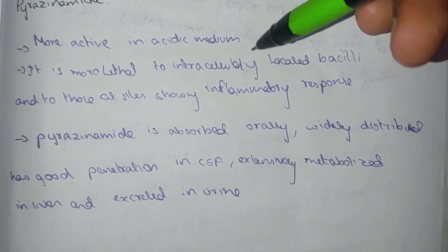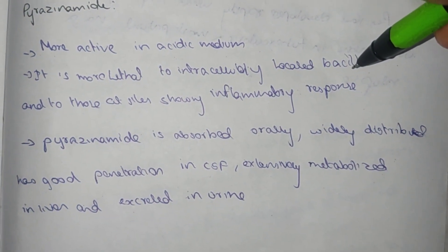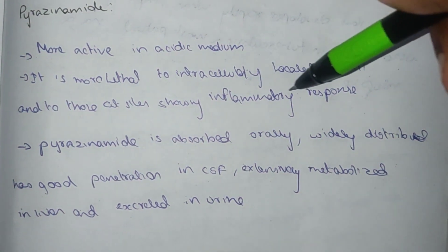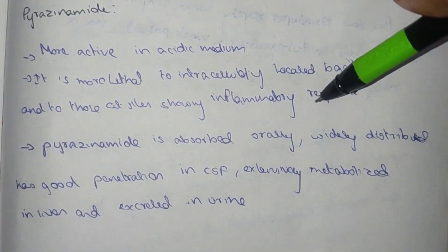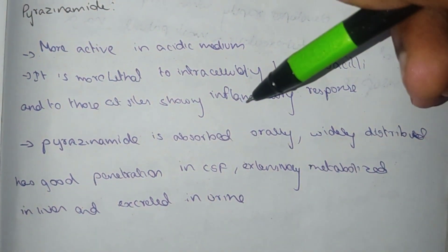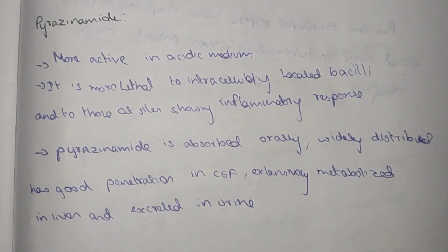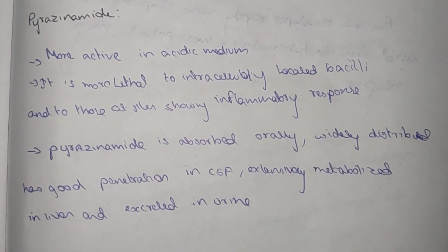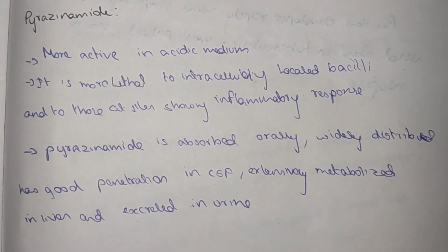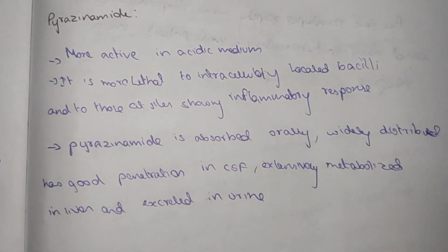Pyrazinamide is showing activity against bacteria showing inflammatory response. It is absorbed orally and widely distributed, has good penetration into the CSF layer, and is extensively metabolized in the liver and excreted in urine.